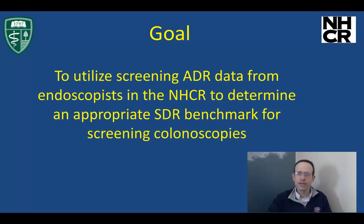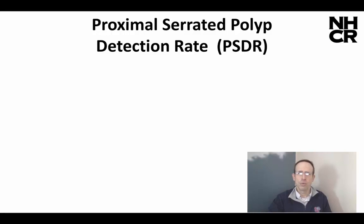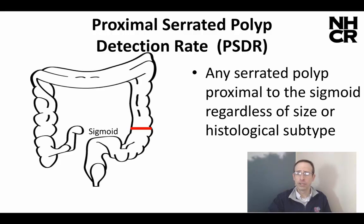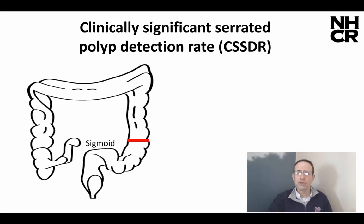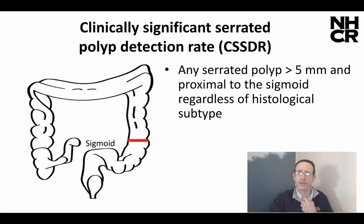The goal was to utilize screening ADR from endoscopists to determine an appropriate SDR for screened colonoscopies, with the idea being that endoscopists who had a higher ADR might similarly achieve higher SDR. The two rates we looked at were: one, a simple rate just looking at all serrated polyps proximal to sigmoid — any exam with a serrated polyp proximal to sigmoid divided by total exams — or the more difficult to calculate clinically significant serrated polyp detection rate, which would involve looking at size and location.